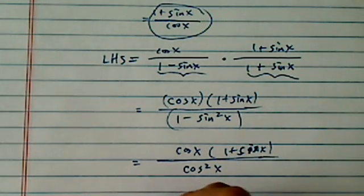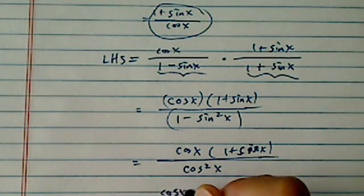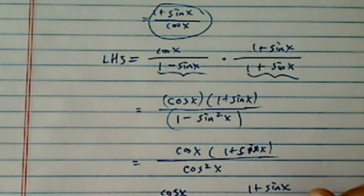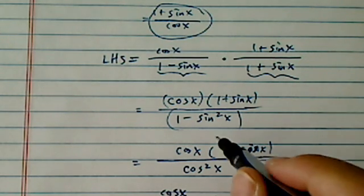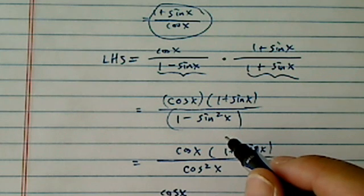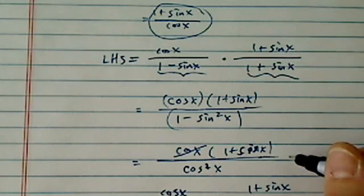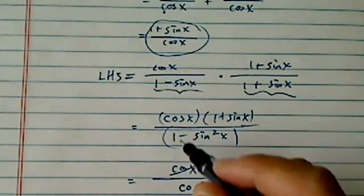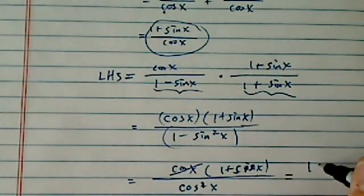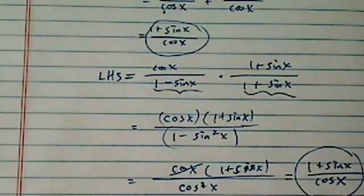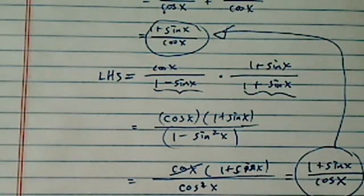If we split this up, I have cosine X divided by cosine squared X, plus 1 plus sine X over cosine squared X. Cosine cancels in the first term, so this becomes 1 plus sine X over cosine X. This is exactly what I need because it equals the right hand side. The proof is complete.